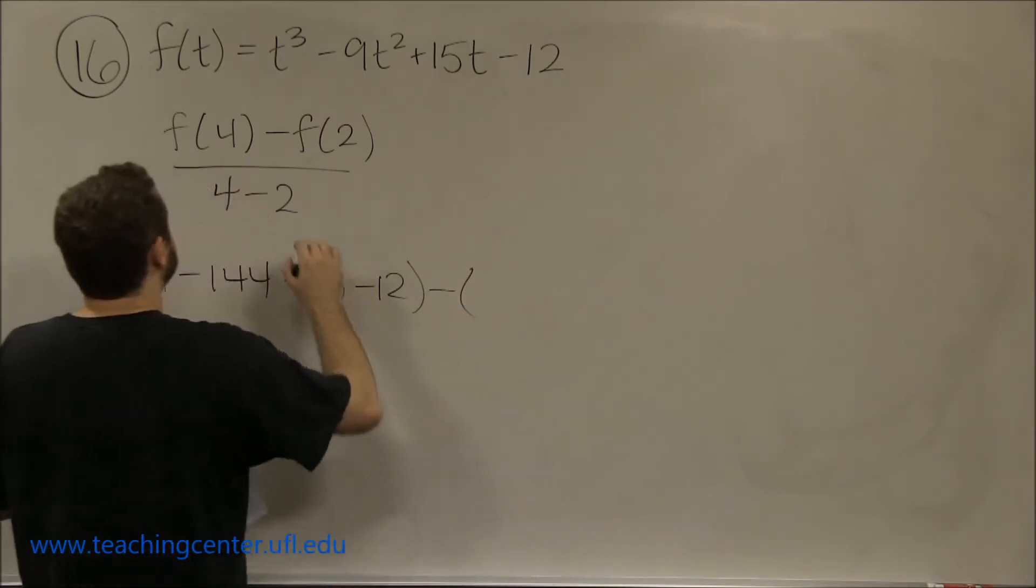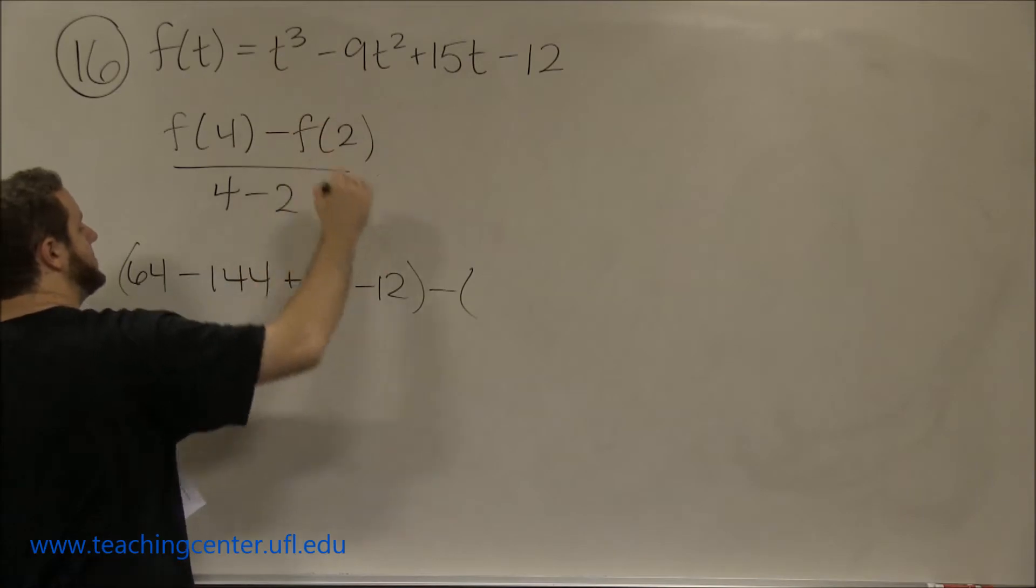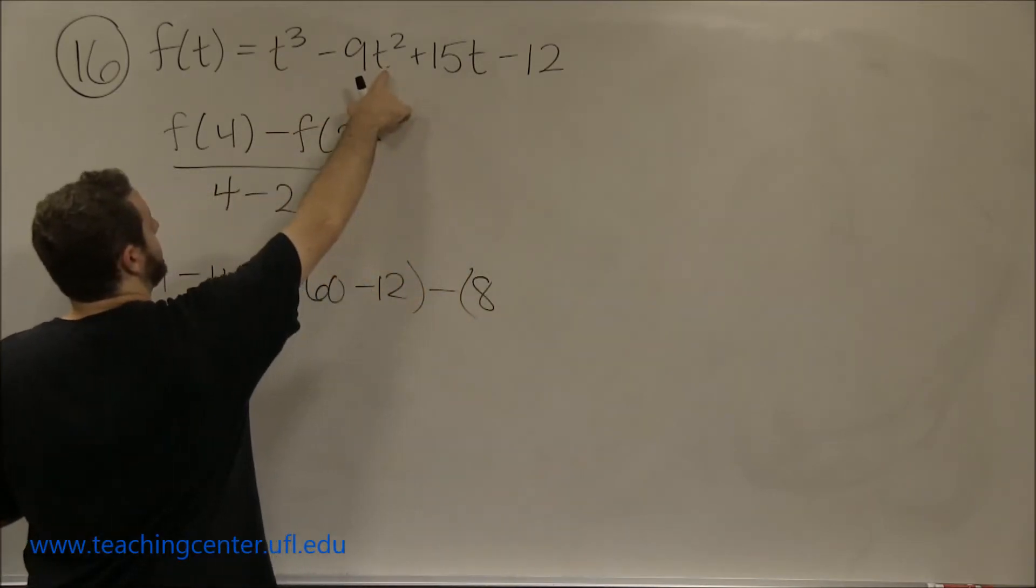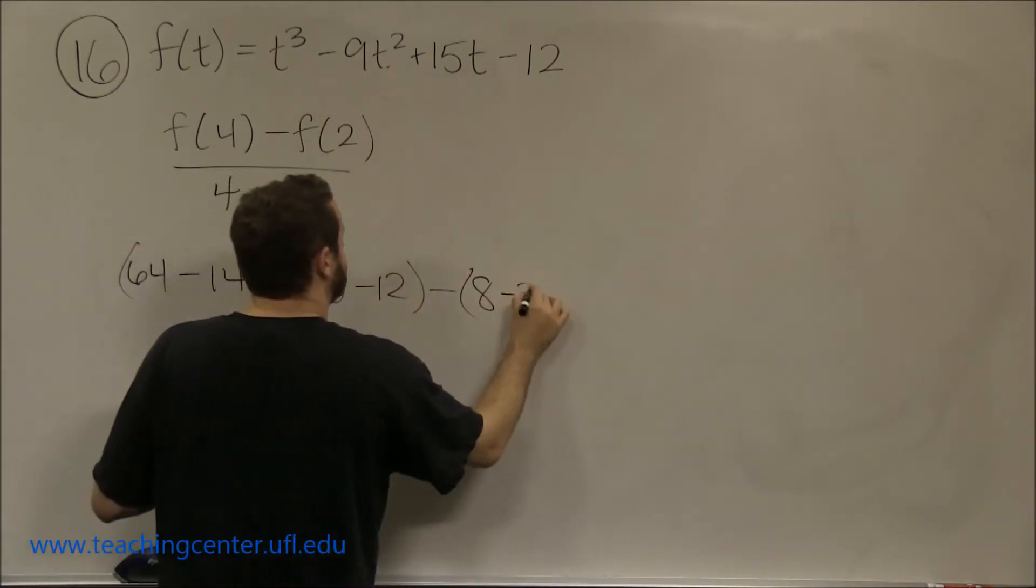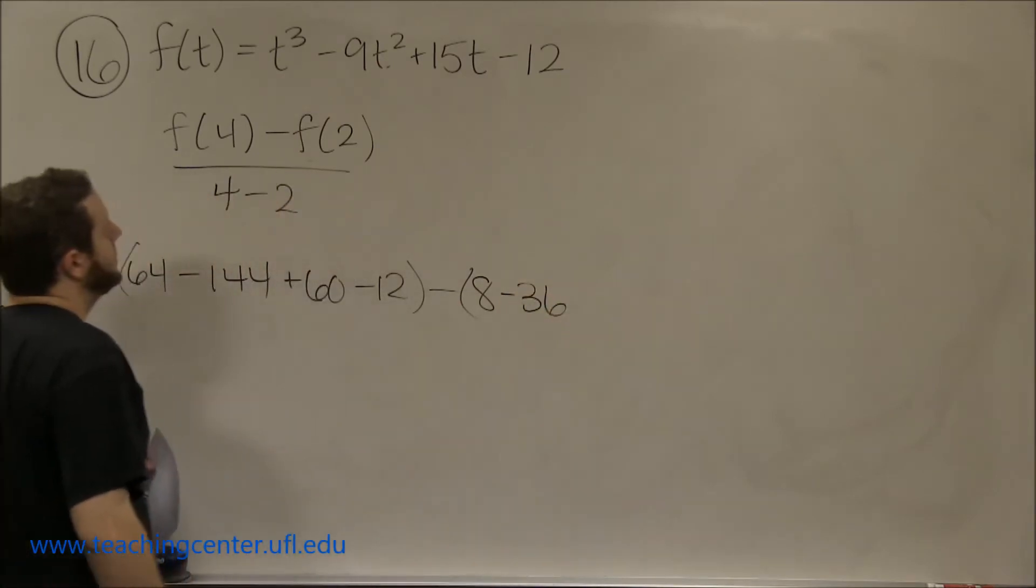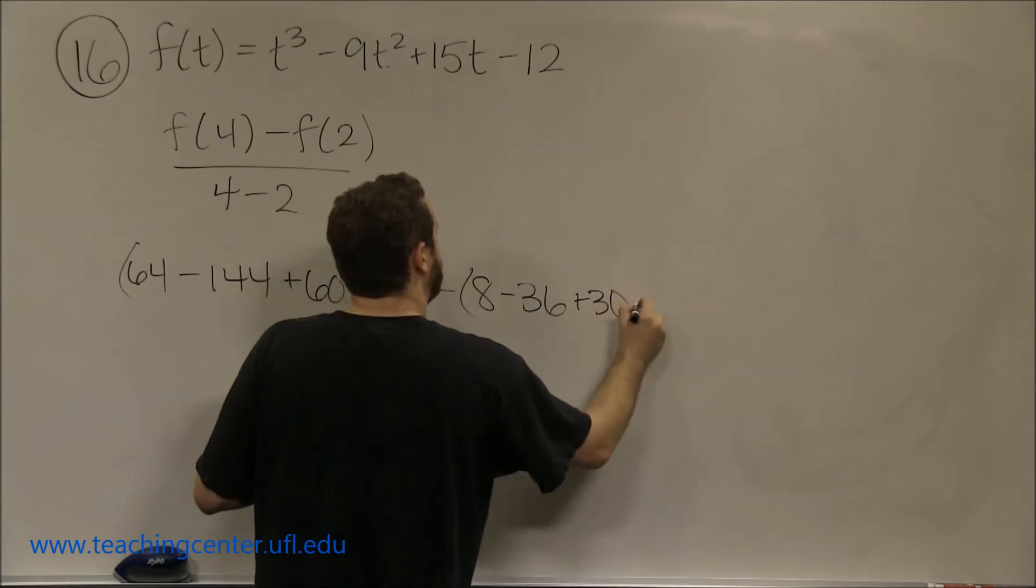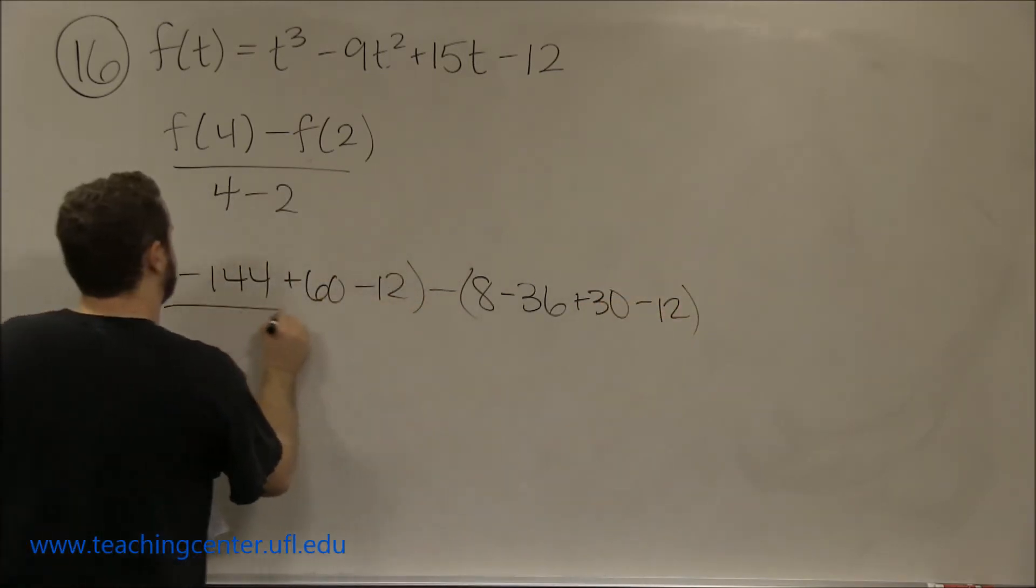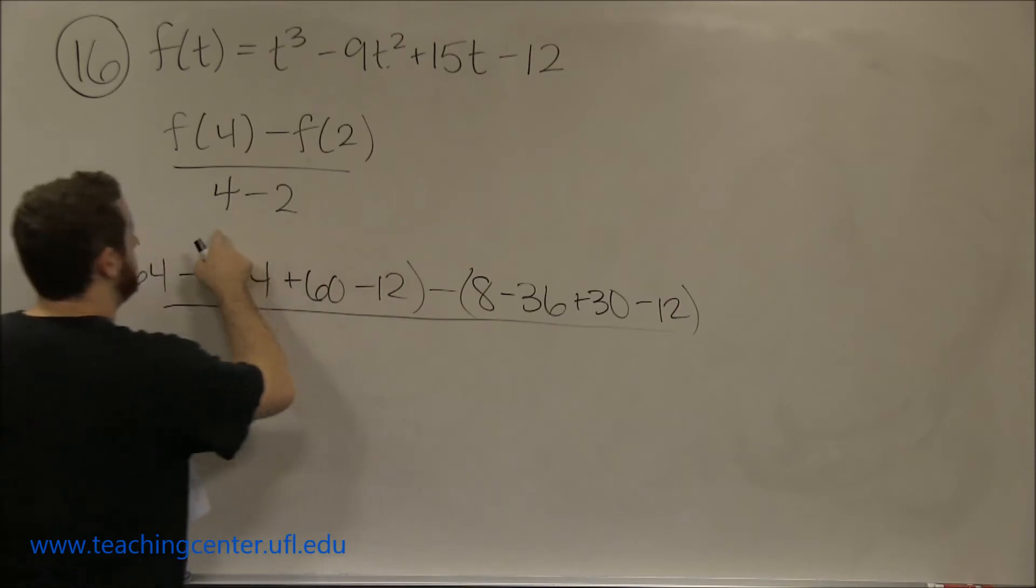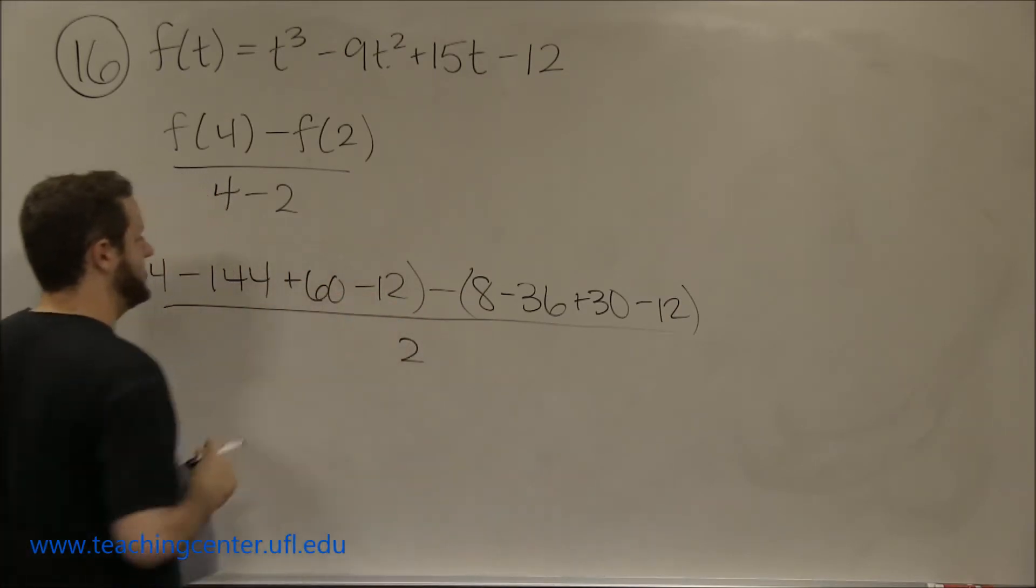And f(2) would be when we plug in 2. 2 cubed is 8, 2 squared is 4 and minus 9 times 4 would be minus 36, plus 15 times 2 would be plus 30, and minus 12.